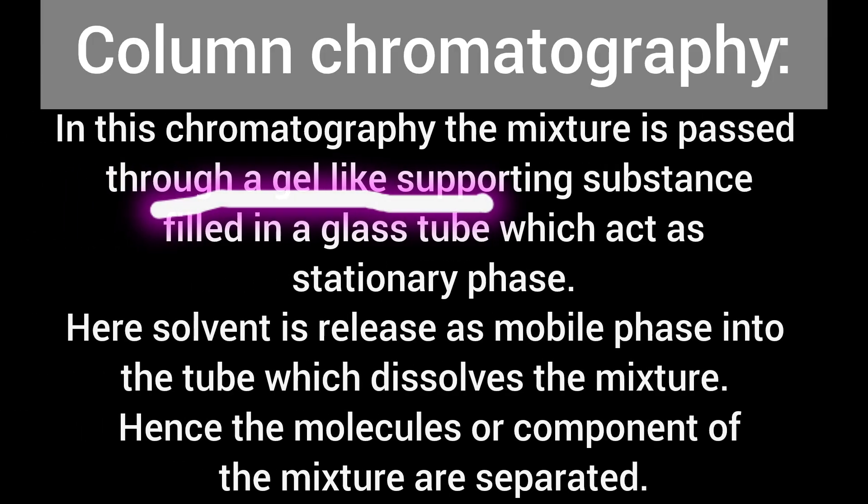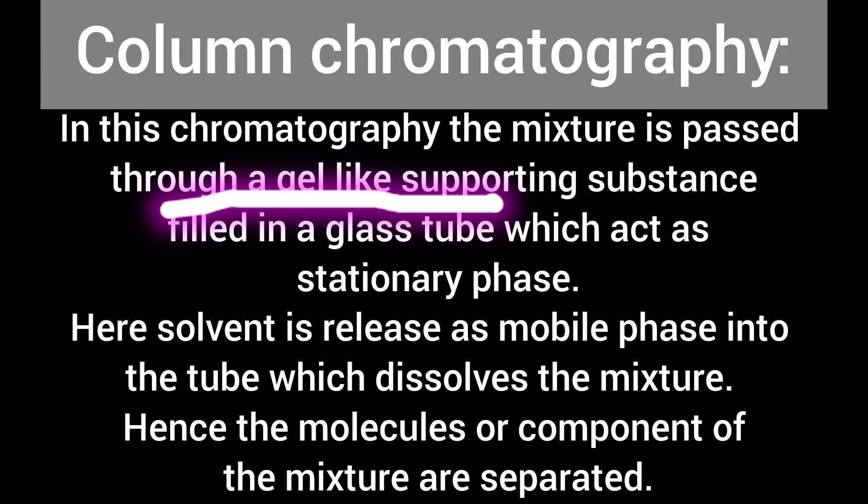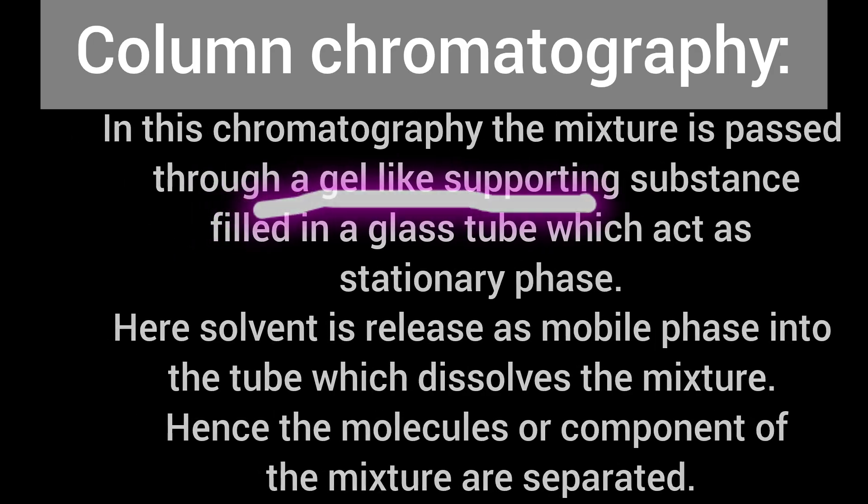In column chromatography, the mixture is passed through a gel-like supporting substance filled in a glass tube, which acts as the stationary phase. Here, a solvent is released as the mobile phase into the tube, which dissolves the mixture. Hence, the molecules or components of the mixture are separated.